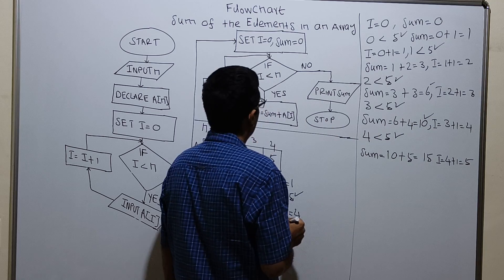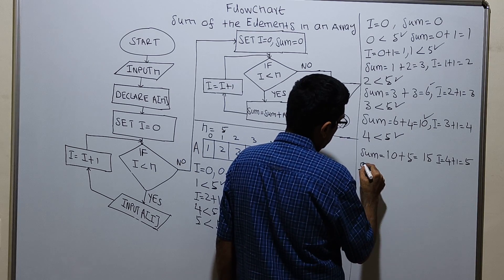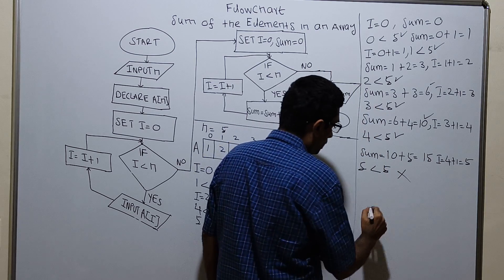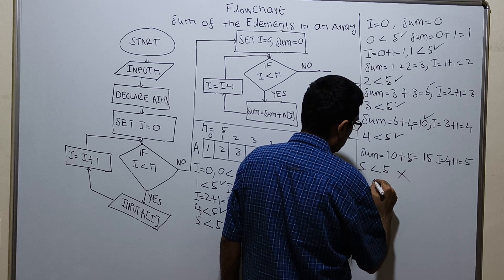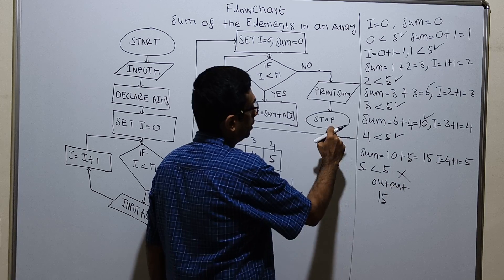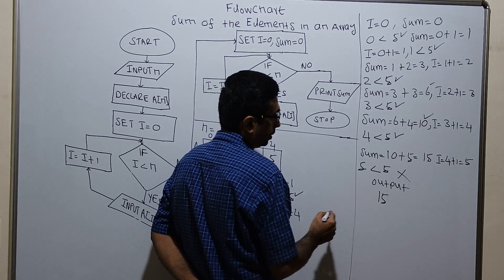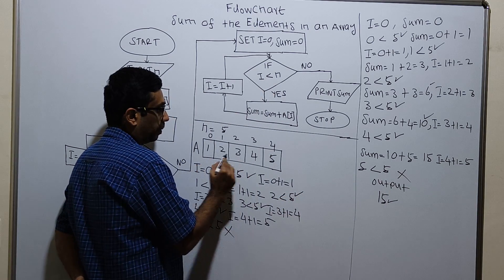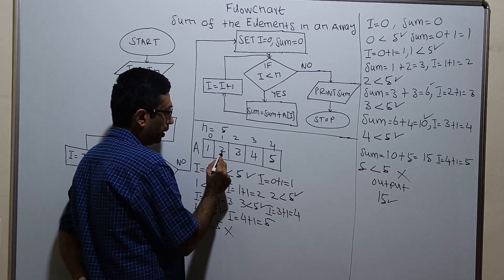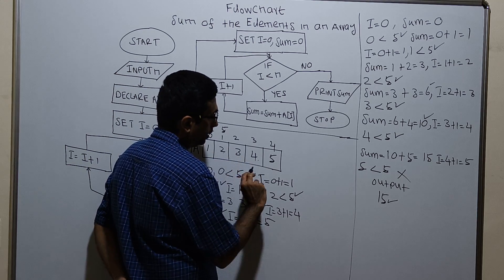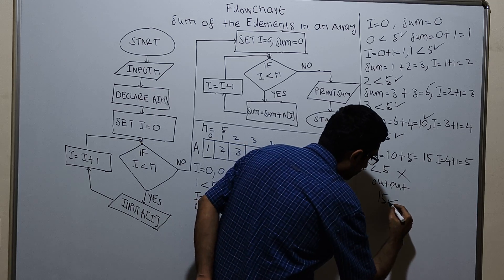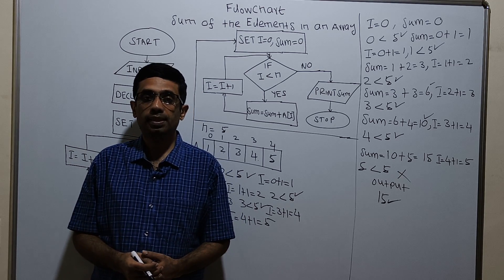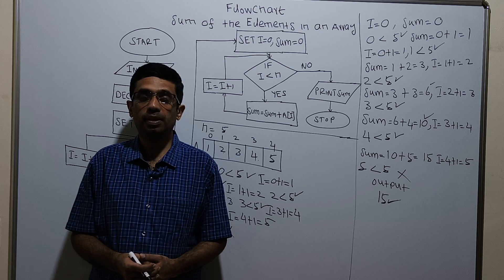Incrementing i by 1, existing value of i is 4. 4 plus 1 which is equal to 5. Checking condition i less than n: 5 less than 5 is false. So the control comes out and prints sum. So 15 is my output. The flowchart ends here, it is the logical stop of the flowchart. My output is 15. All of the elements are 1, 2, 3, 4, 5. 1 plus 2 is 3, 3 plus 3 is 6, 6 plus 4 is 10, 10 plus 5 equals 15. So my output is correct. This flowchart is working perfectly. That's it. Thanks for watching this video, please subscribe to my channel, share, comment and press the bell button. Thank you.